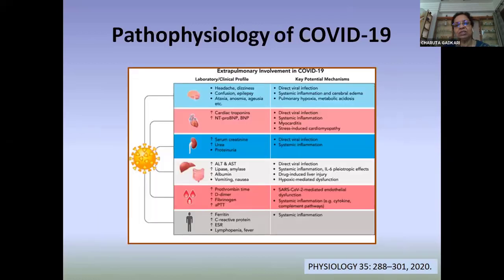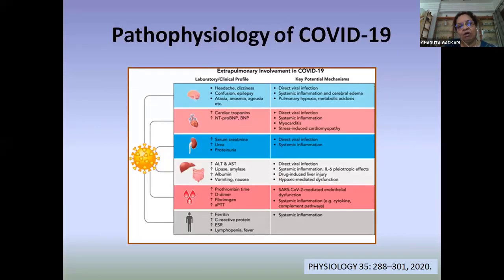Mechanisms involving extra-pulmonary structures become active. The involvement can occur through direct infection by the virus or mainly due to the systemic inflammatory response created by the body.